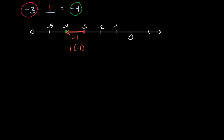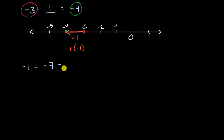Let's do another example. Let's say we had negative one is equal to negative seven minus what? Pause the video and try to work through that — try to do a number line, I always find that useful. Let's work through this together again.